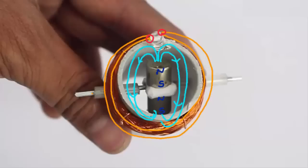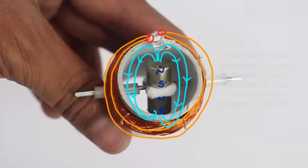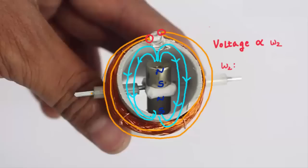The magnetic lines of force cut the coil and the rotating magnets produce voltage in the coil. Voltage generated is proportional to the rotational speed of the spinning magnet. The speed as we saw is proportional to the ratio of the diameters.